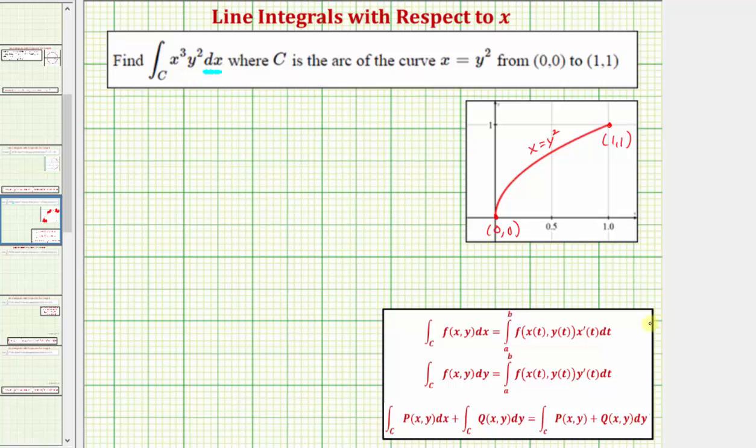To evaluate this line integral, looking at our notes below, the integral of f(x,y) along the curve C with respect to x is equal to the integral from a to b of f(x(t), y(t)) times x prime of t dt. So we need to write the integrand function given as a function of x and y as a function of t using the parametric equations for the curve C, and then differential dx equals x prime of t dt.